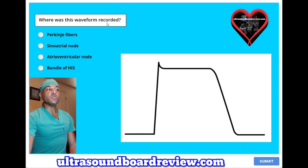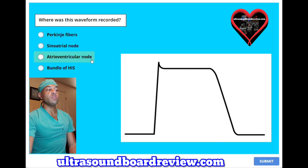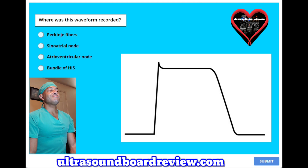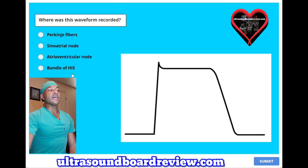Where was this waveform recorded? A. Purkinje fibers. B. Sinoatrial node. C. Atrioventricular node. Or D. Bundle of His. The answer is A — Purkinje fibers.